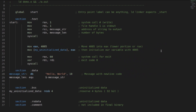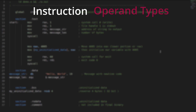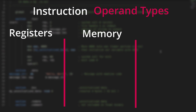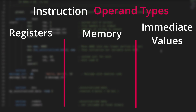For any given instruction, there are three possible operands: a register operand, a memory operand, and an immediate value operand. Registers are the processor's primary workhorse — they essentially are variables built into the processor. Because of this, they are blazing fast.